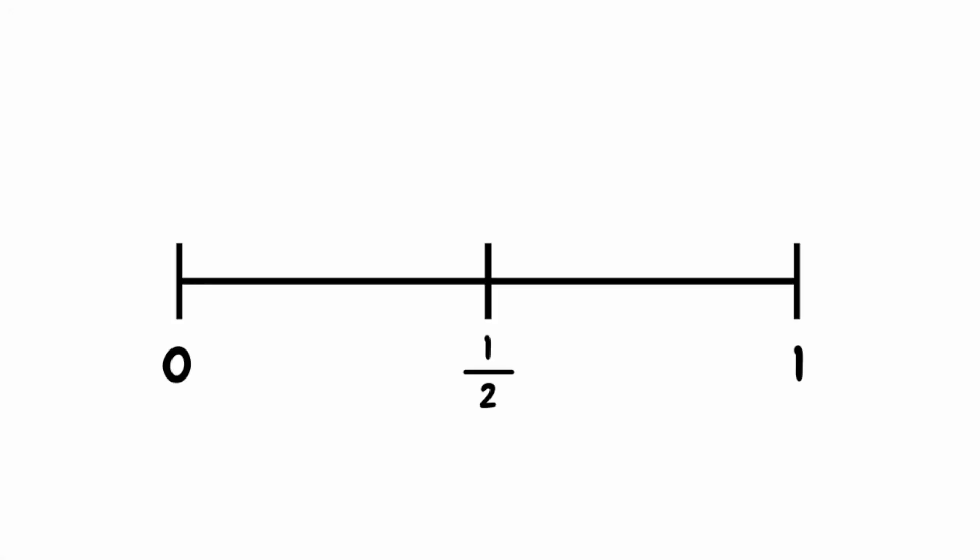In this video we're going to take a look at questions involving probability scales. A probability scale is a number line from 0 to 1 on which we can place the probability of a specific event occurring. We sometimes do this with decimal amounts, but we most commonly use fractions.